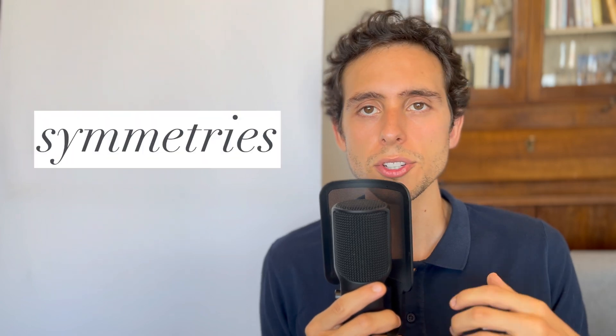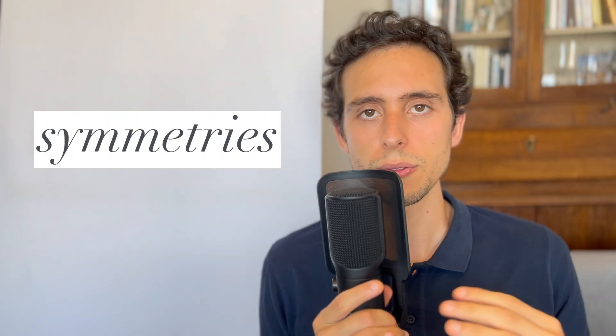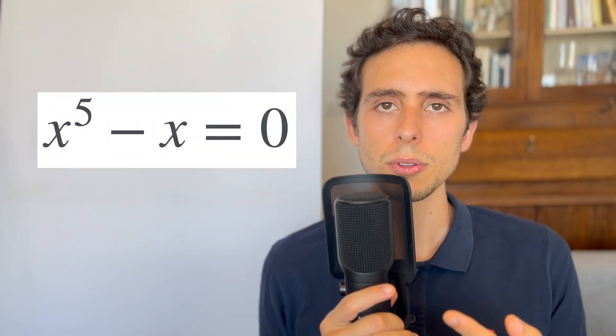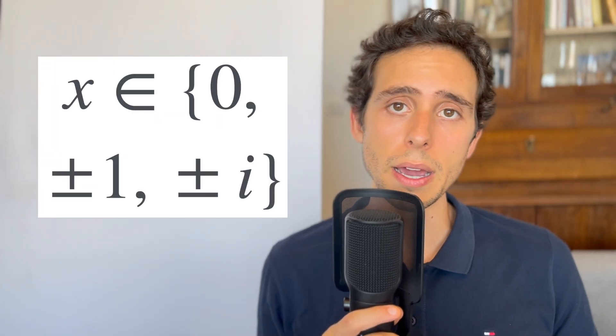So we cannot solve every quintic equation using a formula involving only basic arithmetic and roots. However, some quintic equations can be solved exactly, for example, equations with certain symmetries or specific forms. Let's see this example: the polynomial x to the power of 5 minus x equals 0. This can be factored this way, which simplifies to x equals 0 or x to the power of 4 equals 1. The solutions are 0, plus or minus 1, plus or minus i.